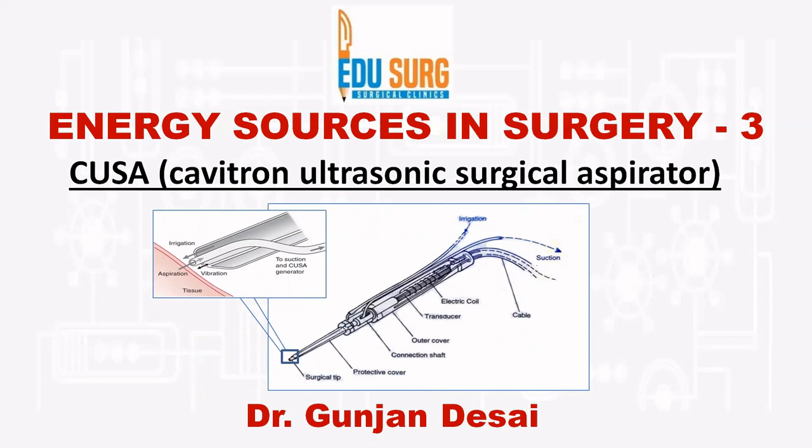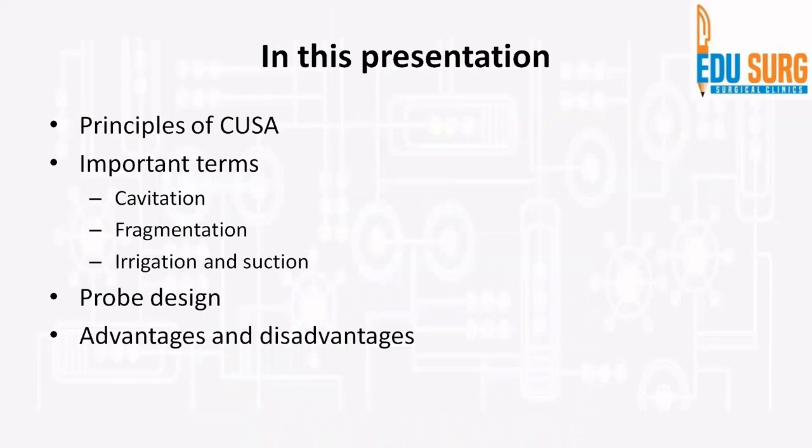The principle of CUSA is tricky and what I have tried here is to use some examples to simplify the concept. In this presentation, after seeing the principle, we will also look at the important terms you need to understand to use CUSA, which include cavitation, fragmentation, irrigation, and suction. These are the terms you will see people use when using CUSA in the OT. We will also see the routine parts of the probe and advantages and disadvantages of using CUSA. So let us see them one by one.